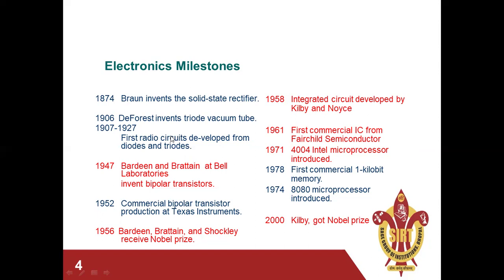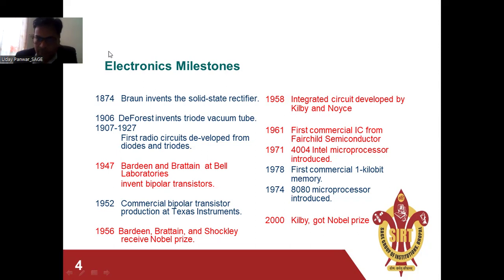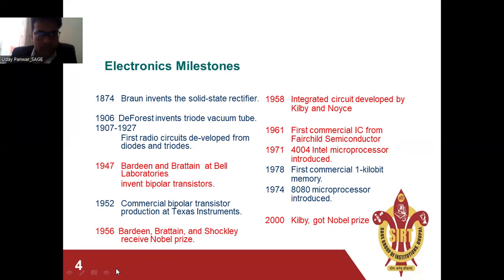In 1956, Bardeen, Brattain, and Shockley received the Nobel Prize for their invention in physics. In 1958, the integrated circuit was developed by Jack Kilby and Noyce. In 1961, the first commercial IC came from Fairchild Semiconductor — the core company of VLSI. In 1971, Intel introduced its first processor, a 4-bit processor — the 4004 processor.